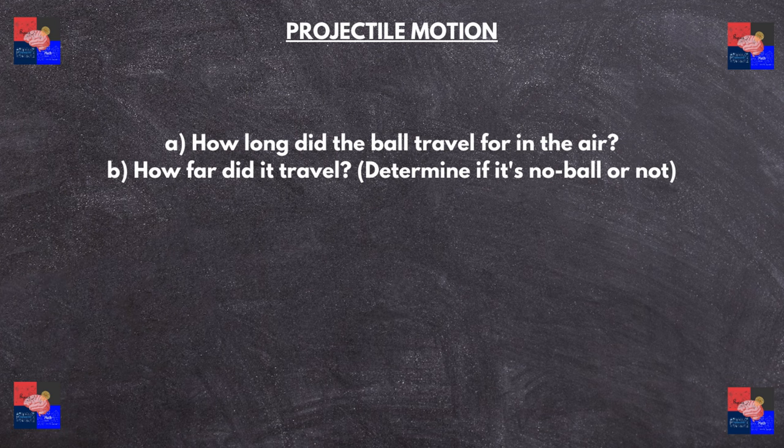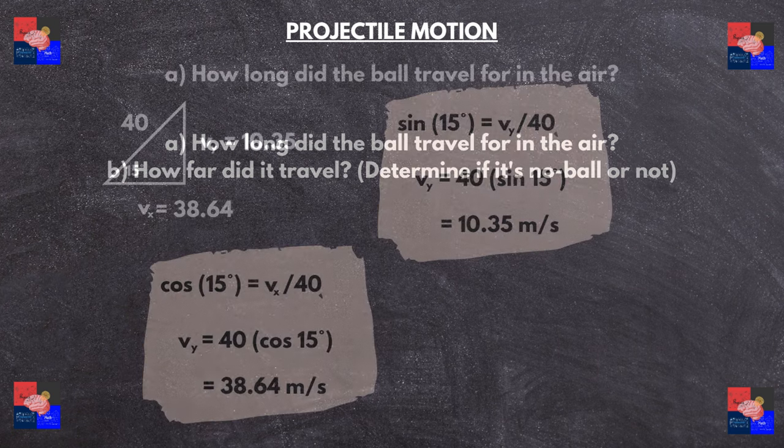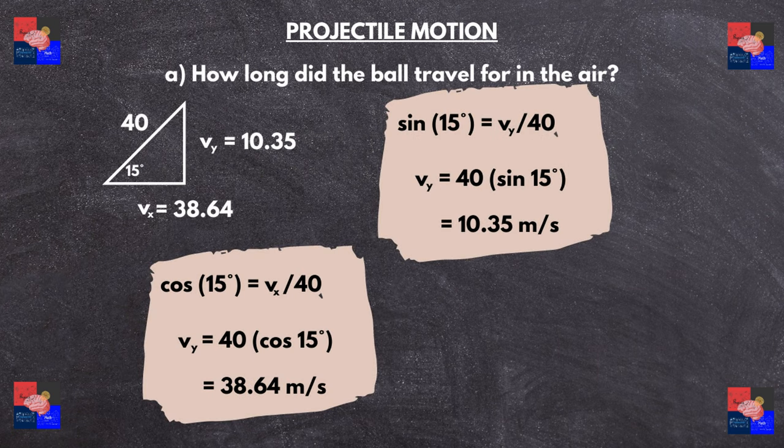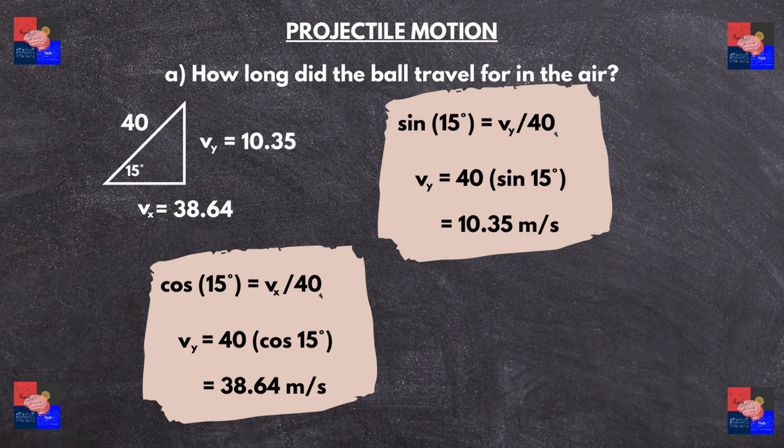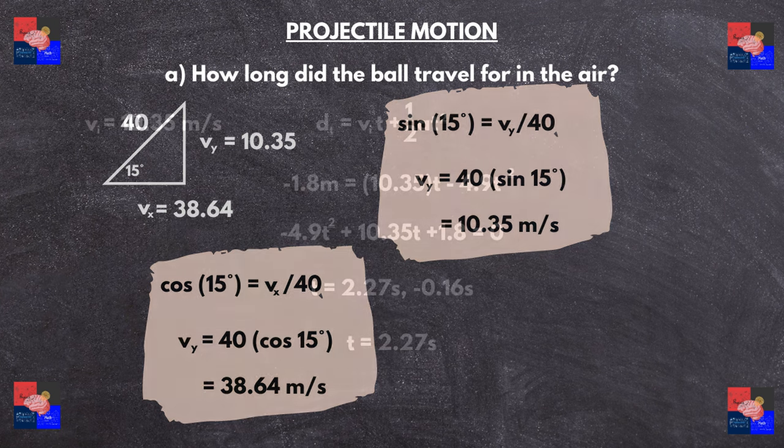So the velocity in the y direction will be 10.35 meters per second since the sine of 15 degrees equals opposite over hypotenuse. As for v_x, we can use the cosine and we get 38.64 meters per second.